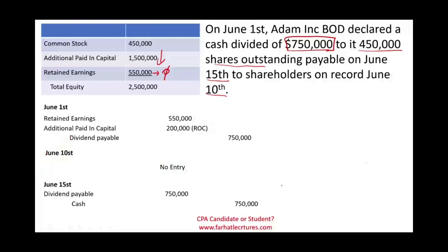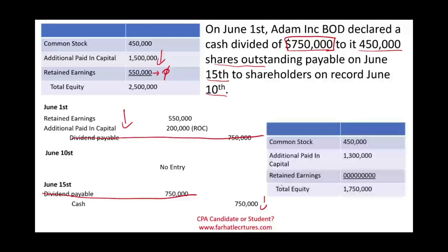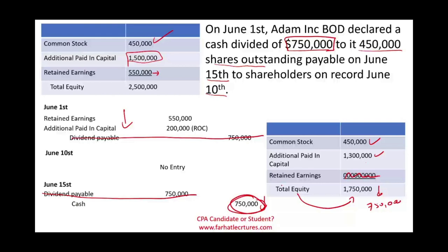So let's see what happened overall. Dividend payable is gone. Our cash went down and our equity went down by $750,000. Notice: liquidating dividend reduces your cash and reduces your equity. Common stock was not touched. Additional paid-in capital was reduced from $1.5 million to $1.3 million, and we zeroed retained earnings. Equity went down by $750,000 overall — the amount of cash paid out. We zeroed retained earnings, and we are ready to go back, generate more revenues, incur expenses, and try to increase retained earnings again. This is a liquidating dividend.